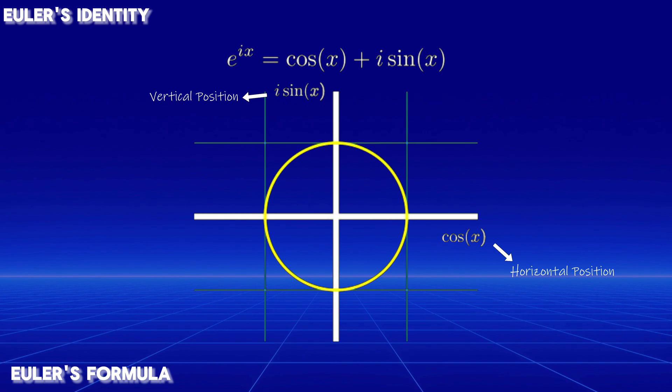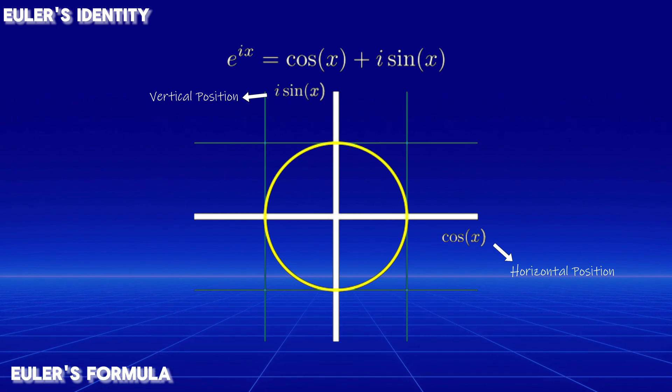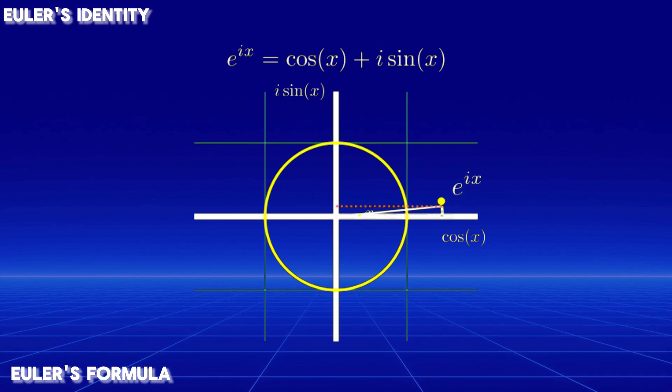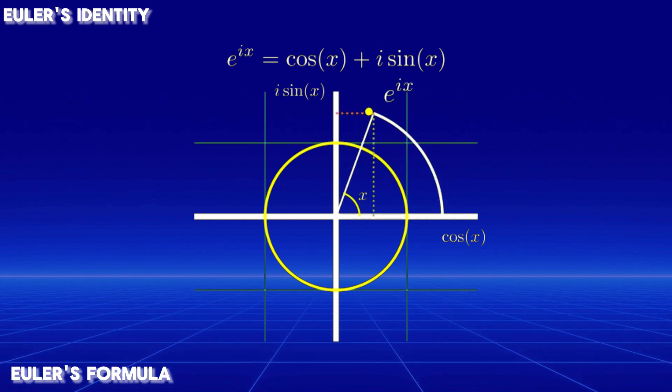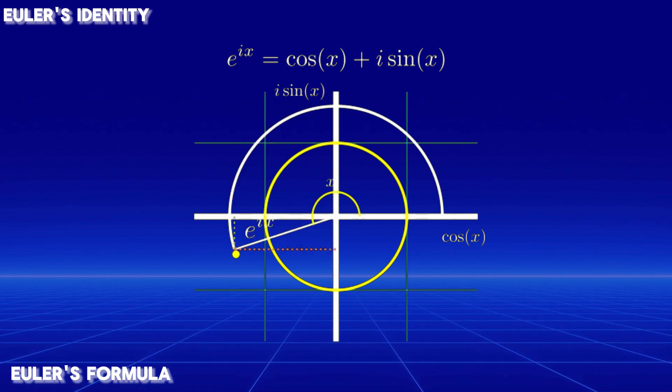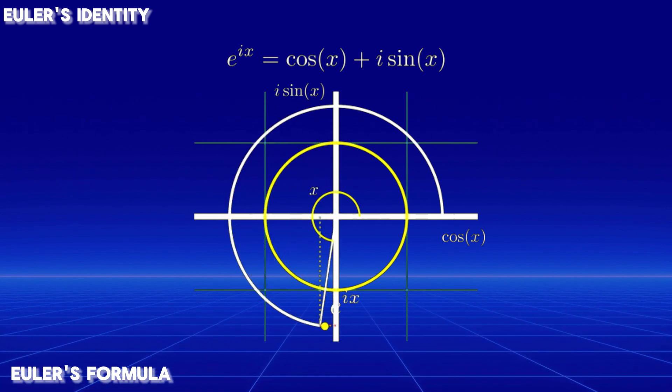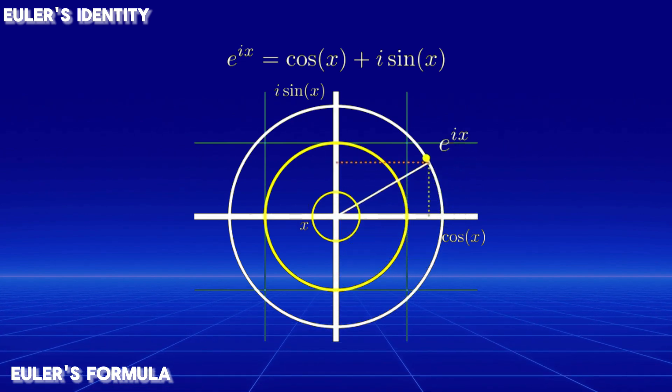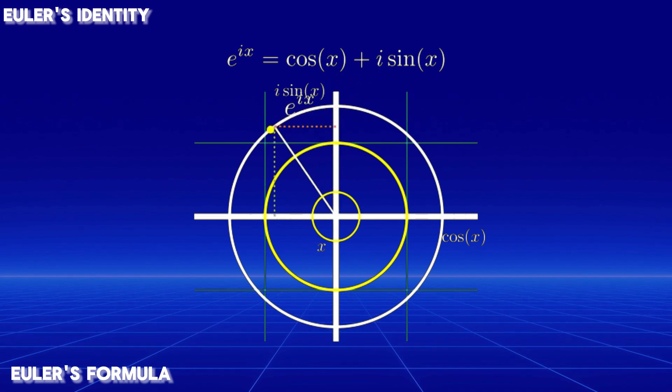Now, consider raising E to an imaginary exponent X. Surprisingly, this exponential expression traces out the exact same circular path in the complex plane. In simpler words, when we raise E to an imaginary power, instead of growing like regular exponential functions, it moves in a circle.